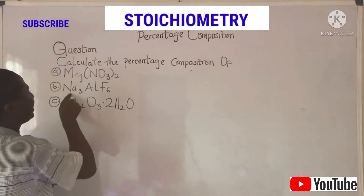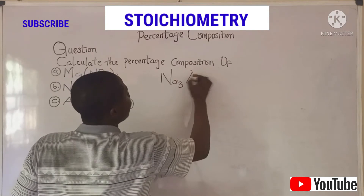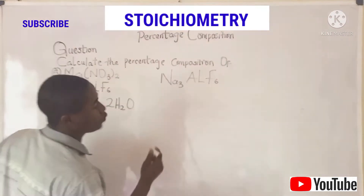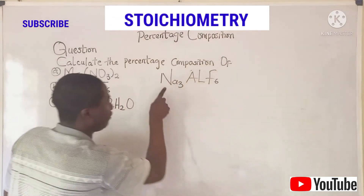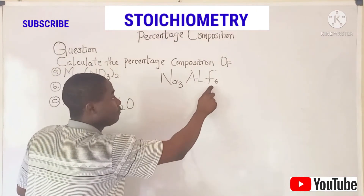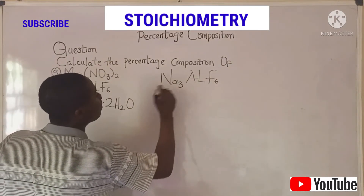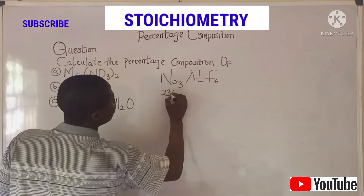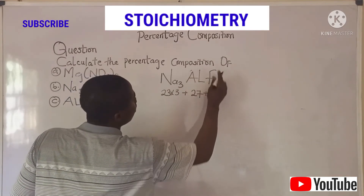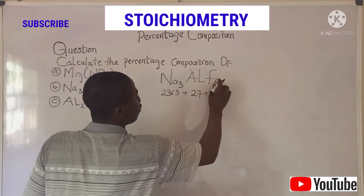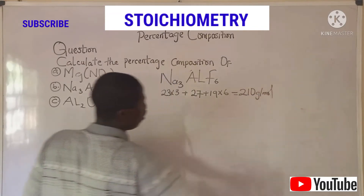This next compound is Na₃AlF₆. First thing first, we need to know how many elements make up this compound — there are three: sodium, aluminum, and fluorine. Let's quickly calculate the formula weight. The atomic mass of sodium is 23, but we have three atoms, so 23 times 3. The atomic mass of aluminum is 27. The atomic mass of fluorine is 19, but we have six atoms, so 19 times 6. This gives us 210 grams per mole — the molar mass of the compound.